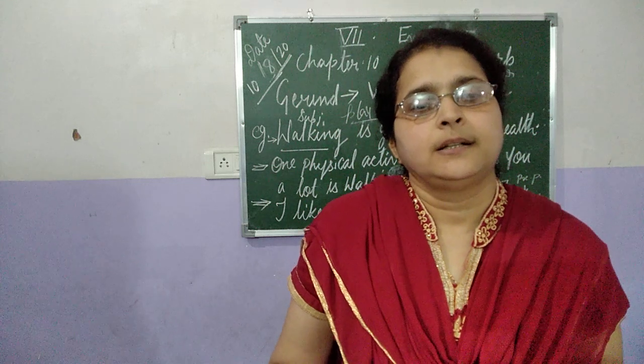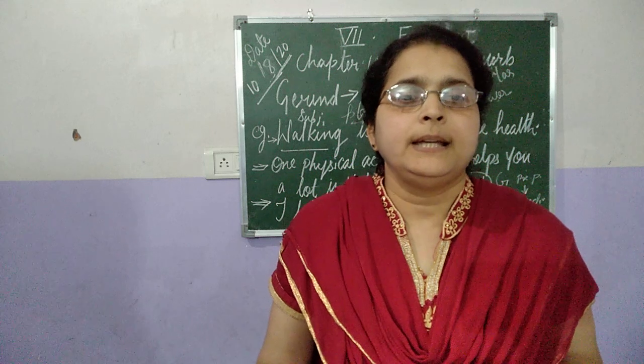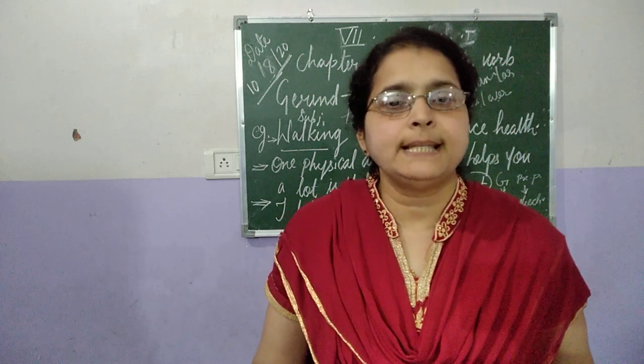Gerund is a word which acts as a noun in a sentence. We form a Gerund by adding ING to the verb's first form. Doing words are called verbs — for example: play, run, jump, swim, walk. Verb plus ING gives us: playing, walking, dancing, singing. Verb plus ING is a Gerund.